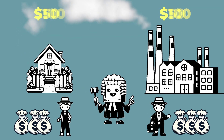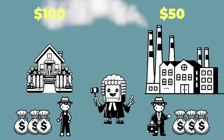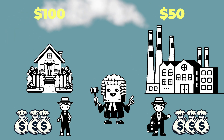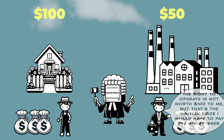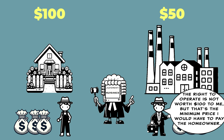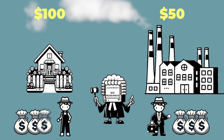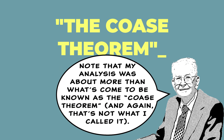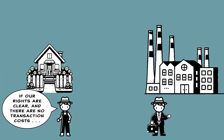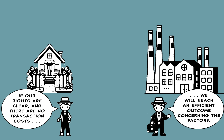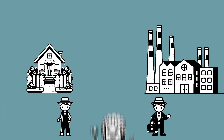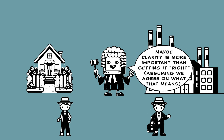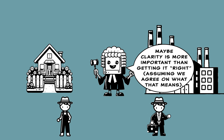This works in reverse. Let's reverse the values: suppose the homeowner values life without smoke at $100, and the factory owner values operating at $50. Now the factory will shut down regardless of who wins the nuisance suit. If the homeowner wins, it's not worth it to the factory owner to pay the homeowner off. If the factory owner wins, the homeowner will pay some amount over $50 to get the factory to shut down. This insight is referred to as the Coase Theorem — basically the idea that absent transaction costs, parties will bargain to efficient outcomes concerning externalities regardless of the initial allocation of property rights. One implication for nuisance law is that if transaction costs are low, it might matter more that property rights be clear than that they be properly assigned in the first instance.